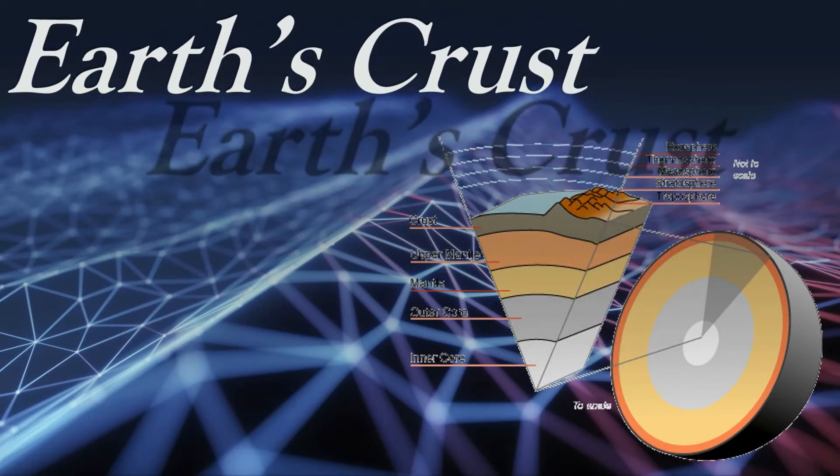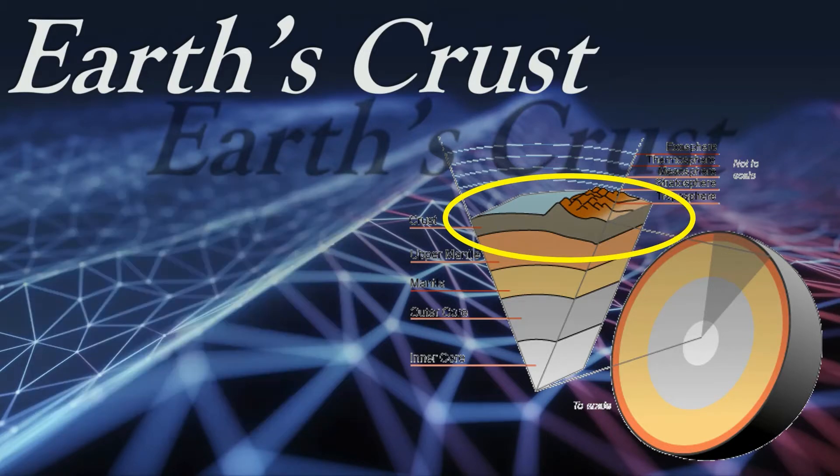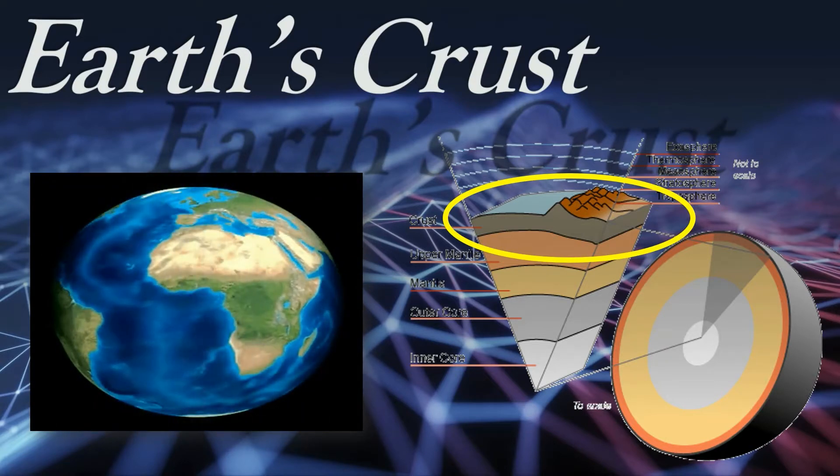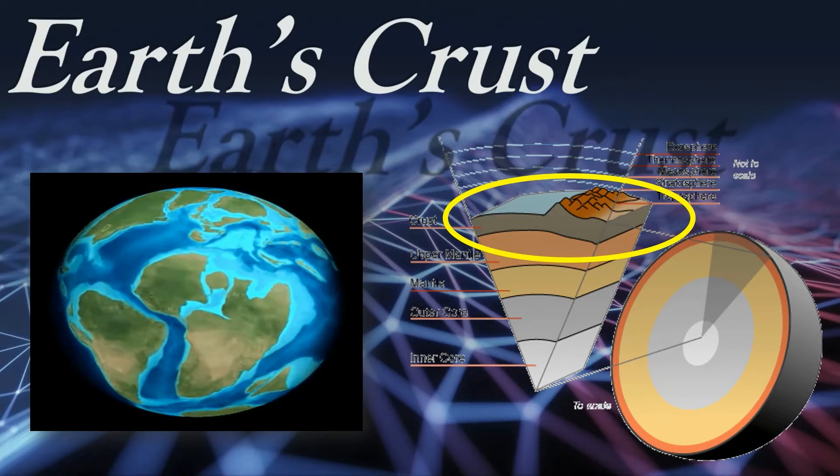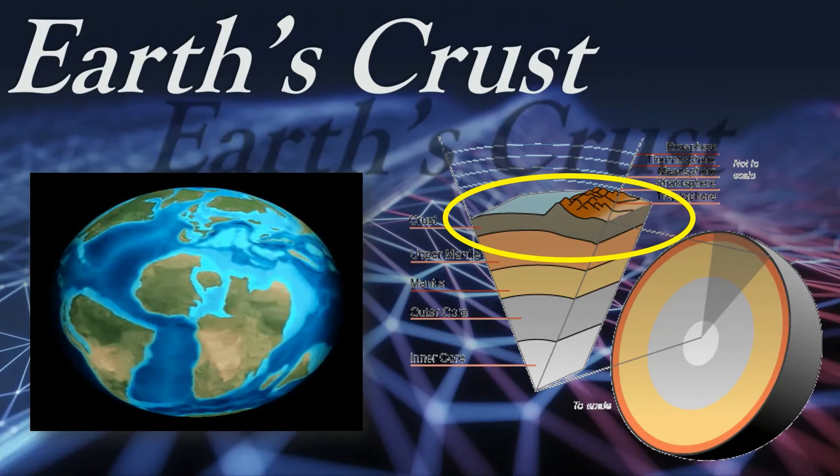It is thin compared to the other layers, a little bit like the peel of an orange. Unlike a fruit peel, the crust is broken up into several pieces called tectonic plates. These plates move relative to each other so that the surface of the Earth's crust is always changing, although very slowly.